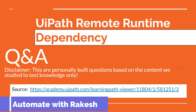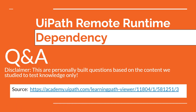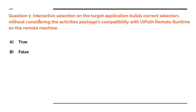Welcome back to Automate with Rakesh. In this video, let's focus on some questions on UiPath Remote Runtime dependency. The first question is: interactive selection on the target application builds correct selectors without considering the activities packages compatibility with UiPath Remote Runtime on the remote machine. Do you need to consider the activities packages compatibility — is this true or false?